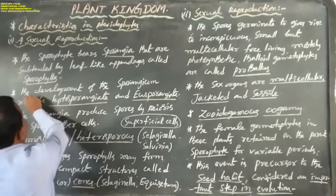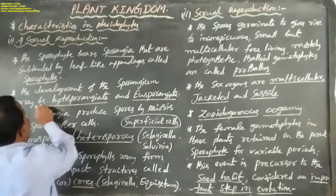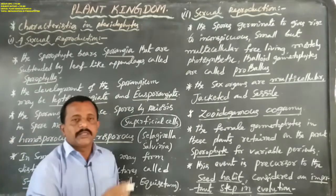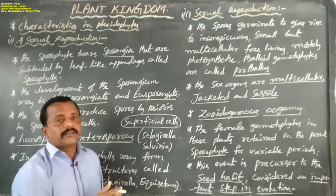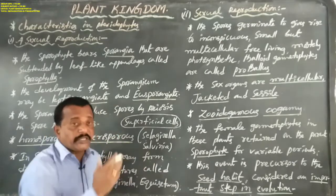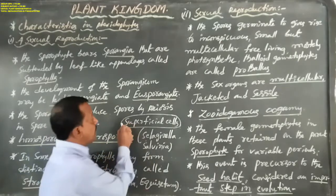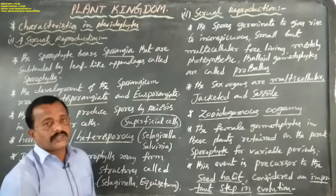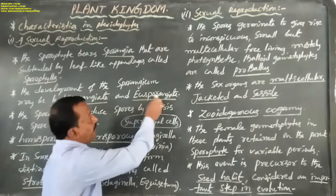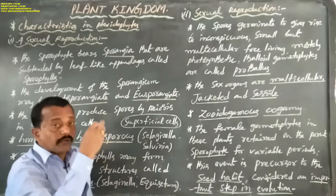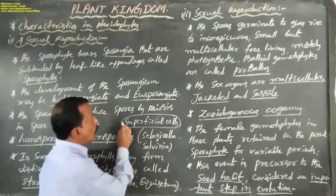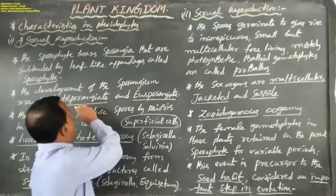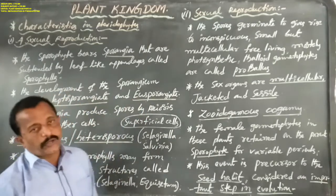The development of sporangia may be leptosporangiate — from a single superficial cell — and eusporangiate — from a group of superficial cells.